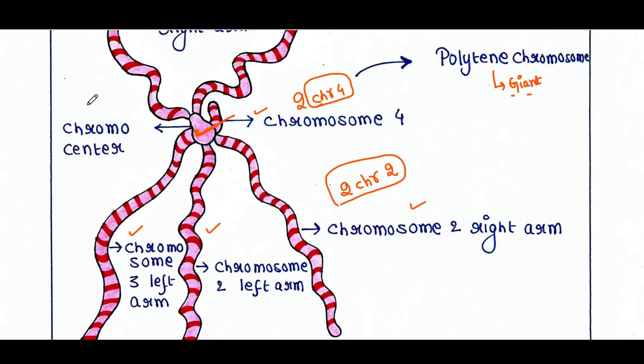All four chromosomes are joined at a particular point called the chromocenter, where the centromeres of all four chromosomes are fused. If it is the chromosome of a male fly, the Y chromosome is very small and will be fused with that chromocenter, so you will not find it under the microscope easily.